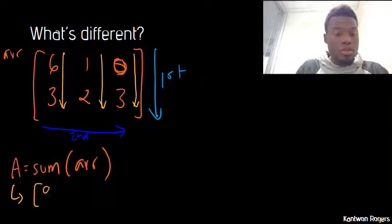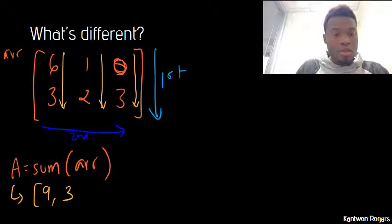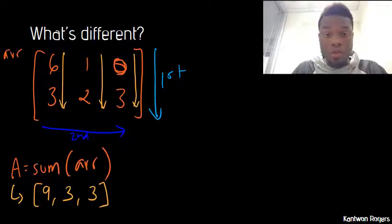So the first number will be 9, the second number will be 3, and the third number will be 3 as well.